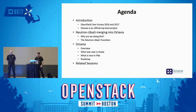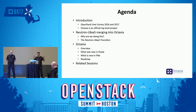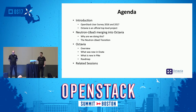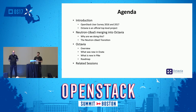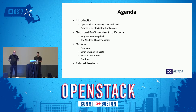Our agenda for today is pretty simple. We're going to do an intro, talk about the user surveys for last year and this year. We're going to talk about how Octavia is now an official top-level project. Also the Neutron-LBAS merge into Octavia — probably the biggest topic on a lot of people's minds right now — why we're doing that and how the transition is going. Then we'll talk about Octavia in particular, give an overview, what's new in Ocata, what's new in Pike, and a little bit about our roadmap.